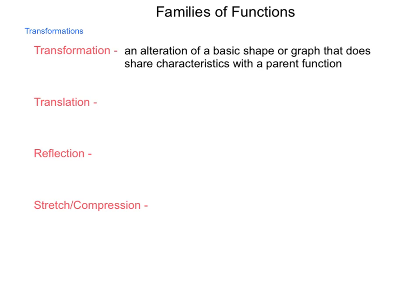The main function that we begin with is called the parent function, and everything that results from different transformations are considered the family of that parent function. You could consider them daughter or son functions if you would like, but we talk about them in general as the family of functions and the parent. So what different transformations can happen?